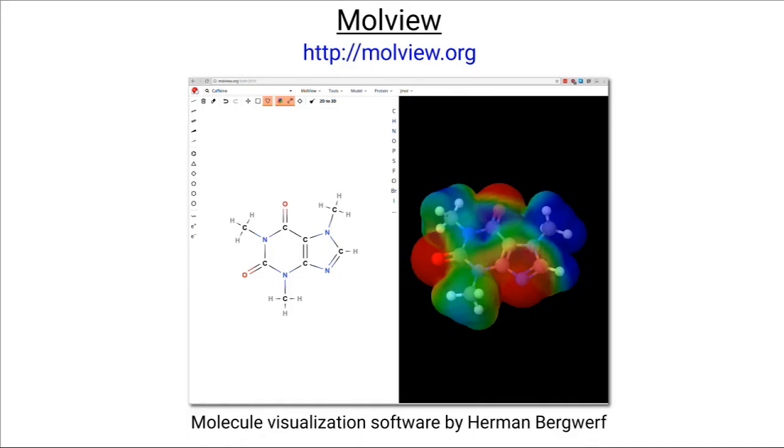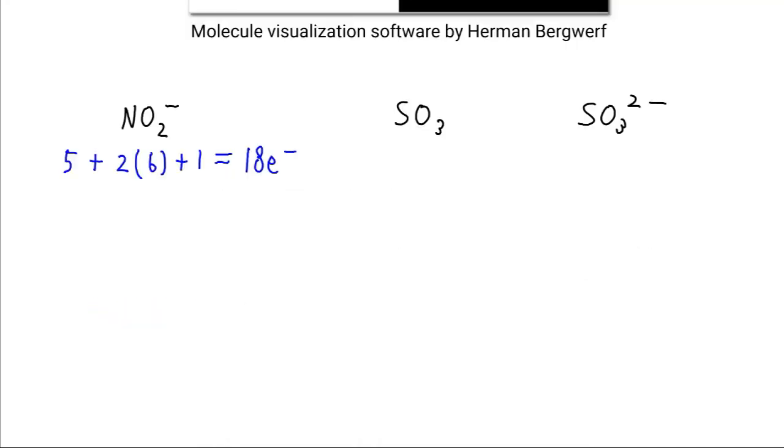Of course, the first thing we need is that Lewis structure. So before we start using Malvue, let's get a few Lewis structures that we can dump into it.